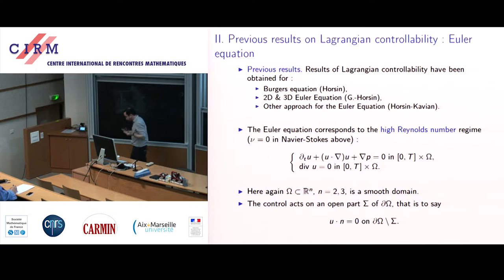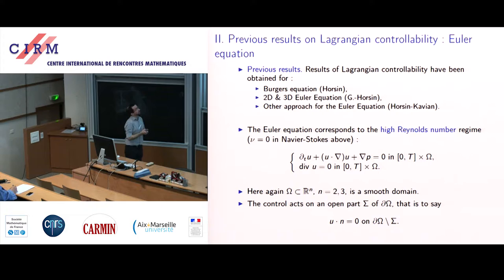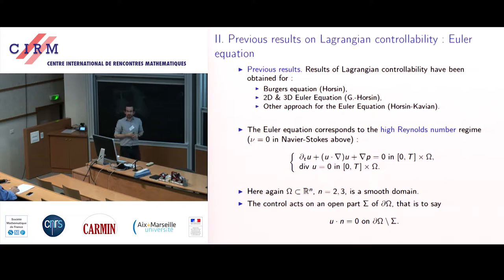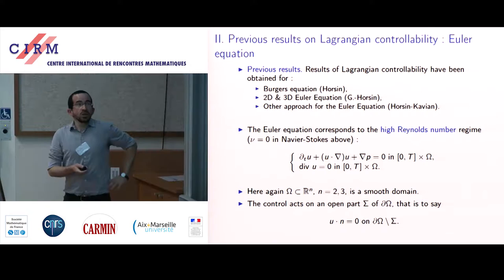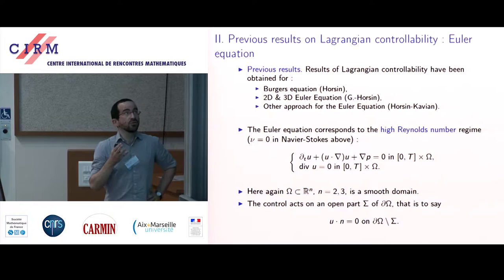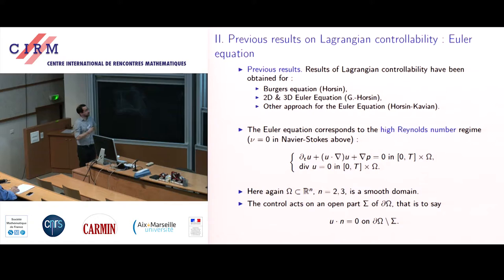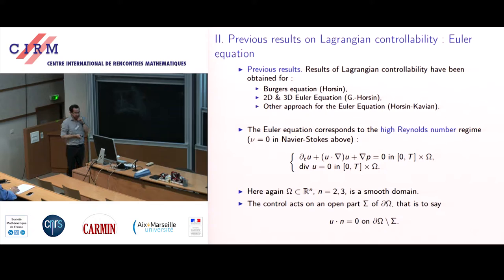What I'm presenting today is not the first result in the field. The first result was by my co-author Thierry Orsini from Conservatoire National des Arts et Métiers in Paris, and concerned the Burgers equation. Then we worked together on the Euler equation, and I will show you the results we obtained for the Euler equation. What I'm going to discuss today is not the Euler equation but the stationary Stokes equation.